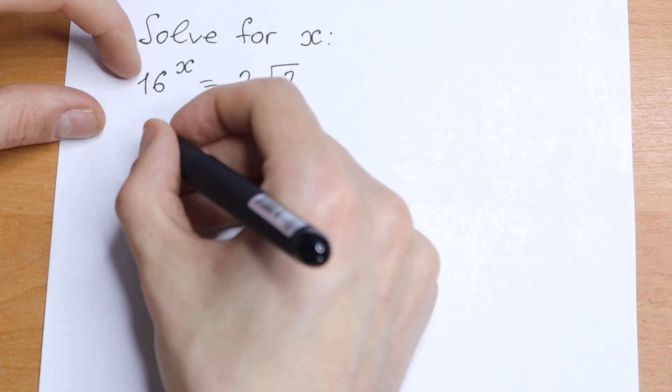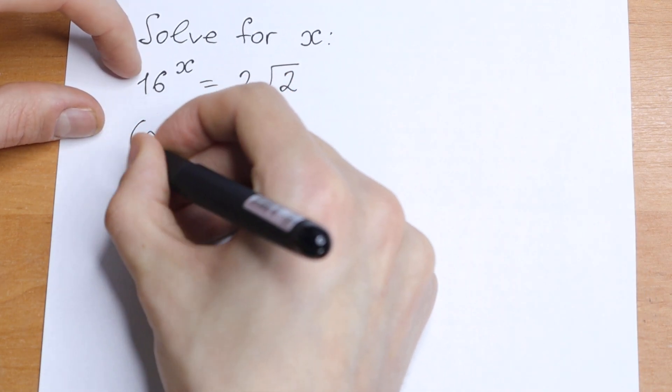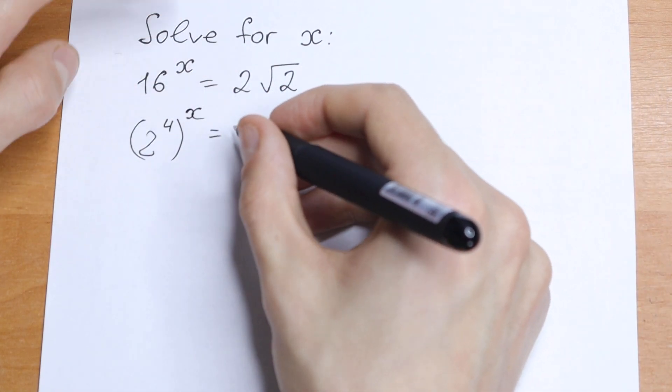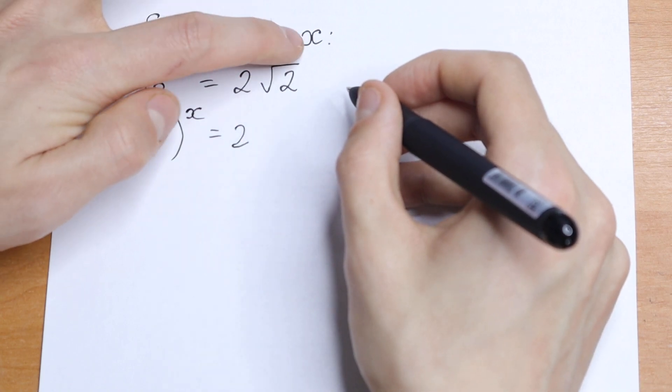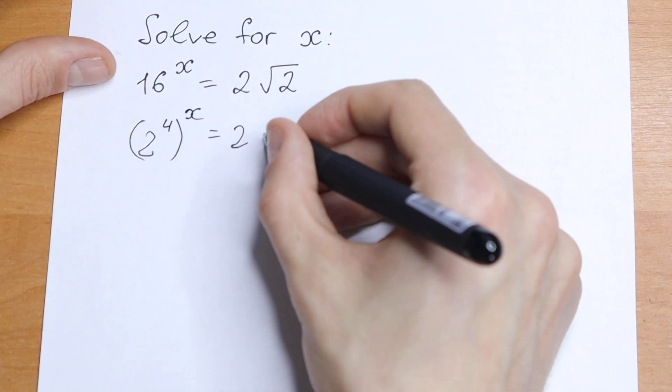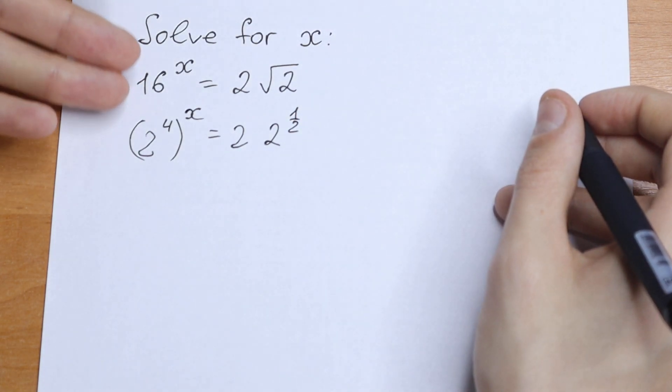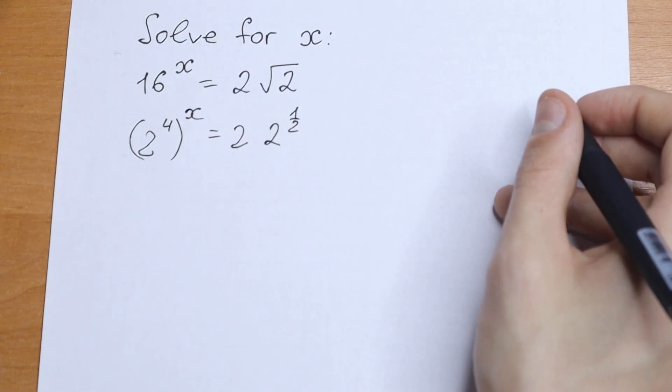This 16 write as 2 to the fourth power and raised to the power x. So this will be the same. And these 2 the same. And we have a square root of 2, so we can write it as 2 to the power 1 half. So nothing changed but writing with 2's right here.